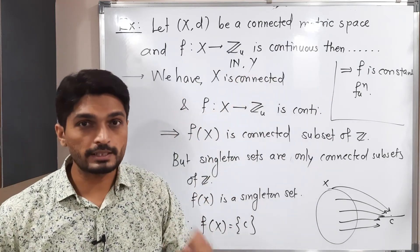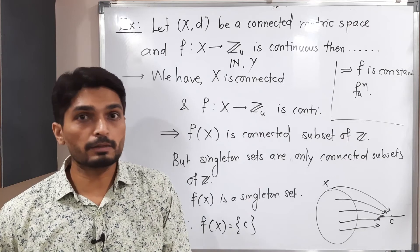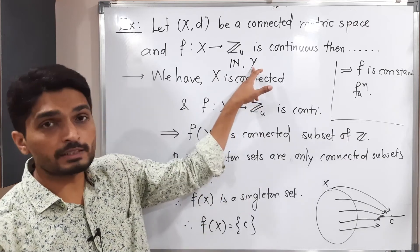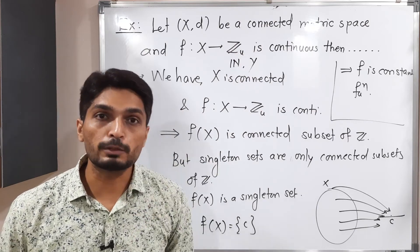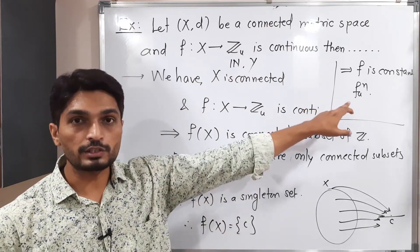Or if it is a finite set. Finite set, it will work like a discrete metric. So if Y is a finite set, then also and if you have the remaining information same, then also our conclusion will be f is a constant function.